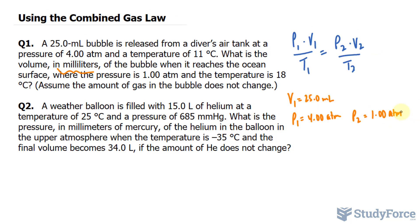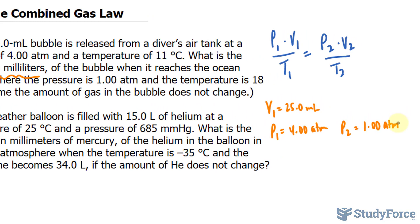The temperature is 11 degrees Celsius. I'm going to add 273 to that. That's how you convert from Celsius to Kelvin. So adding 273, we end up with 284. So the temperature is 284 Kelvin. Also the final temperature is 18, so 18 plus 273 is 291.